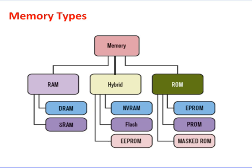Memories in the ROM family are distinguished by the methods used to write new data to them — usually called programming — and the number of times they can be rewritten. ROM devices are categorized from hardwired to programmable to erasable and programmable. A common feature of ROM devices is their ability to retain data and programs forever, even during a power failure.